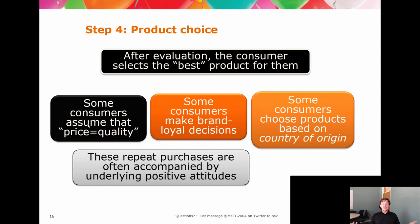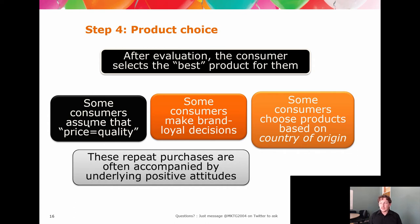For product choice, there are a bunch of factors: the country of origin effect, which we've mentioned in international marketing; the price-quality metric, which will come up again in the pricing chapter; and brand loyalty — the best product is the product I already use. I'm happy with my brand, so I'll continue using it. Product choice comes with a lot of research but also has other impacts in play, including the availability of the product.